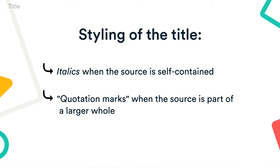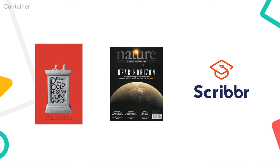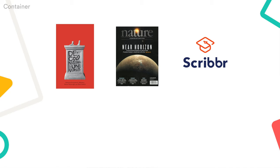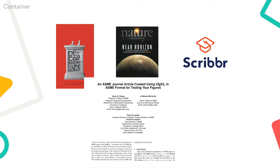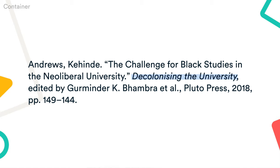A container is the larger work that the source you're citing appears in. For example, a chapter is part of a book, a page is part of a website, and an article is part of a journal. You should italicize the container. Leave out this element if the source is a self-contained whole, like a book.